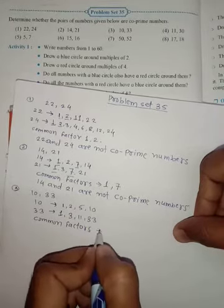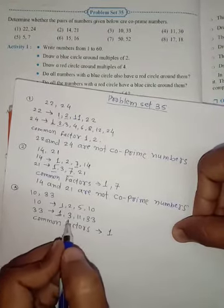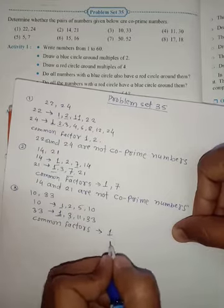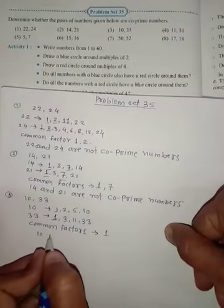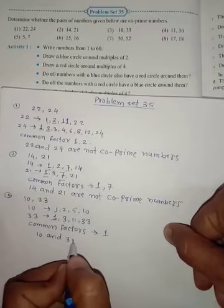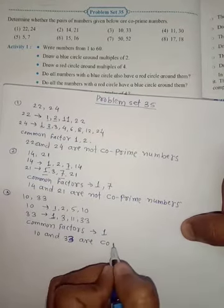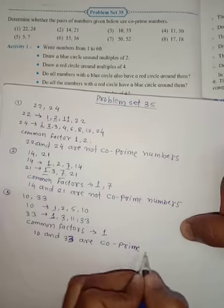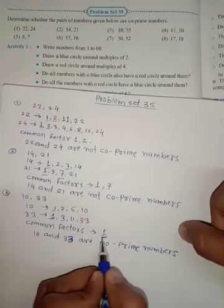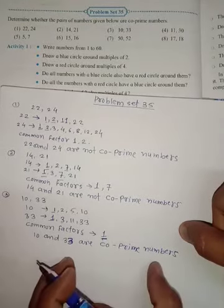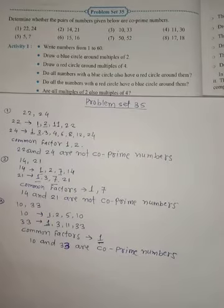The only common factor of 10 and 33 is 1. It has only one common factor, which means 10 and 33 are co-prime numbers. When two numbers have only one common factor, they are called co-prime numbers.